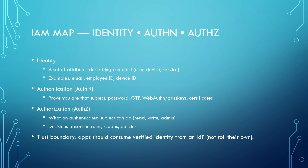Let's get the foundations right. Identity is a set of attributes that describes a subject — a user, device, or service — think email, employee ID, or device ID. Authentication is the process of proving your identity, typically using methods such as passwords, one-time codes, or certificates. Authorization is what you are allowed to do after you authenticate: read a profile, create an order, access the admin panel. The key idea: your app should consume identity from a trusted identity provider rather than inventing its own fragile login logic.